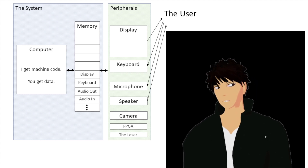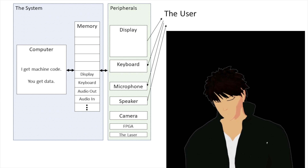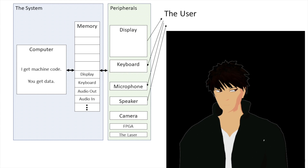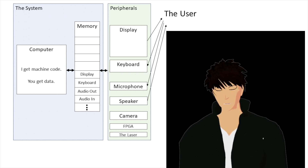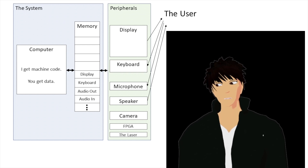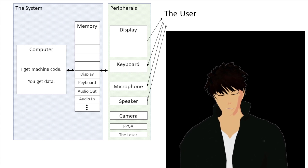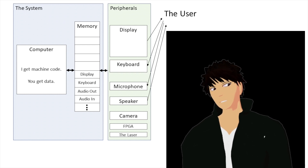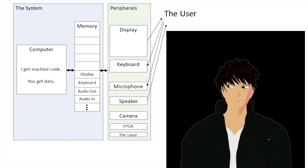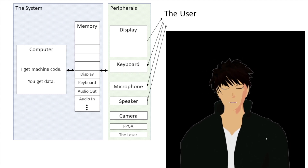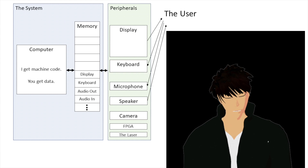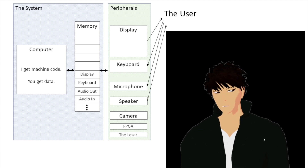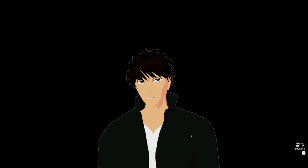We put the data in the register, and then the CPU can go and read the data out and do whatever it wants with it. Or the computer can take some data, put it into the register, and then the peripheral takes that data and gives it back to us in some kind of human-friendly format. For example, a speaker takes some series of digital values and plays a waveform.